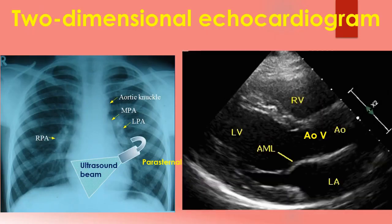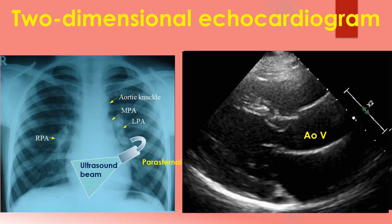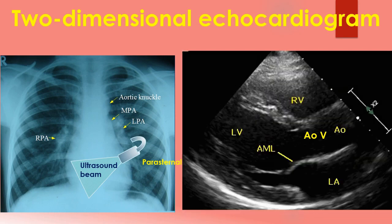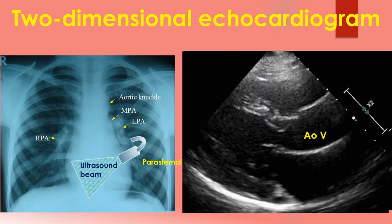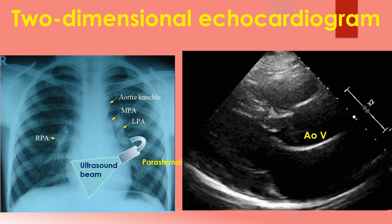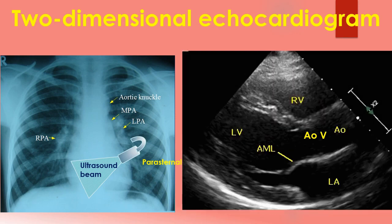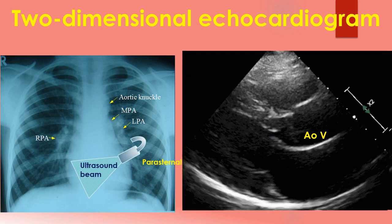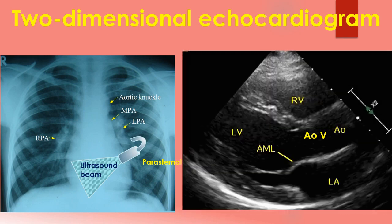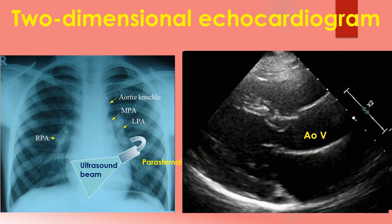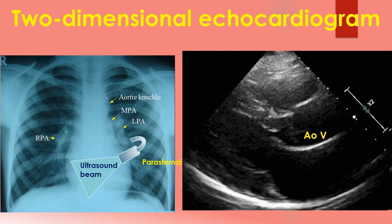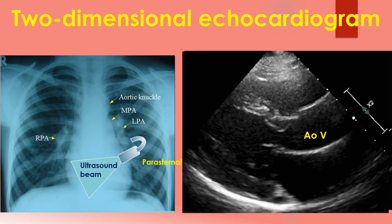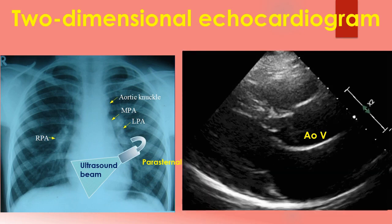During echocardiography, a transducer transmits the ultrasound beam towards the heart. Echoes received by the transducer from various structures of the heart are analysed by the echocardiograph and a graphical representation displayed on the monitor. The location of the transducer is at the top of the image sector. Structures nearer to the transducer are shown at the top of the image and those away from the transducer at the bottom.